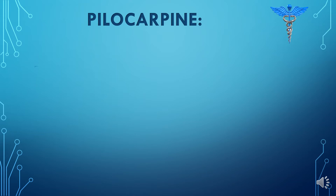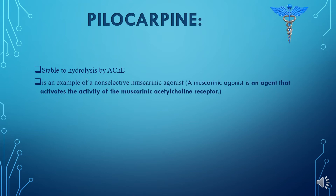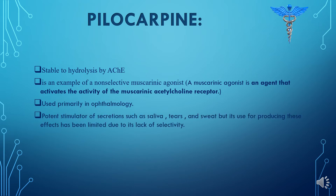Pilocarpine cannot be broken down by the acetylcholinesterase enzyme, as it is stable to hydrolysis by this enzyme. However, the drawback of pilocarpine is that it is a non-selective muscarinic agonist. We can use pilocarpine in ophthalmology; it is a potent stimulator of secretions, but its use is limited due to its lack of selectivity.